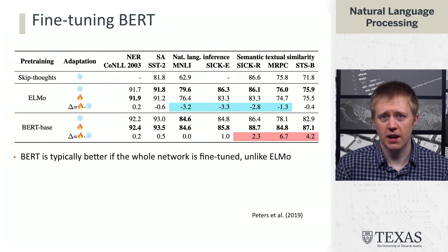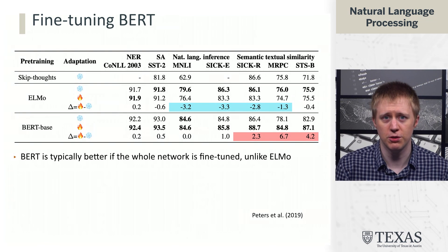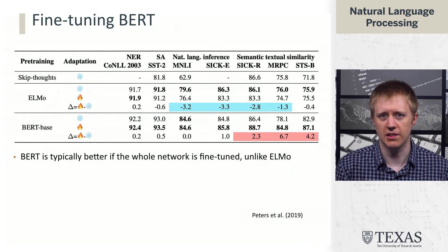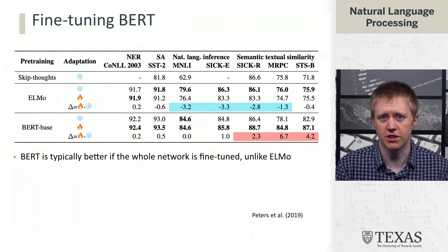This is very different from ELMo. Backpropagating into ELMo parameters was generally not a good idea — fine-tuning actually hurts ELMo performance. But this is flipped for BERT: you rarely want to use BERT as a source of frozen pre-trained embeddings; you almost always want to fine-tune it for whatever task you're doing. Most approaches these days follow the BERT paradigm where fine-tuning is both encouraged and works better.